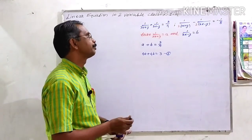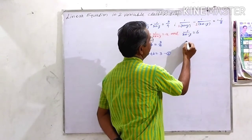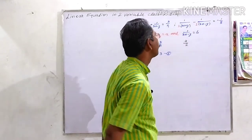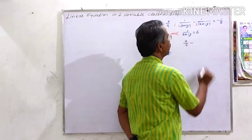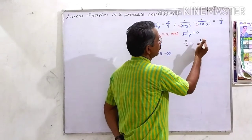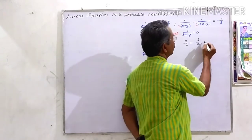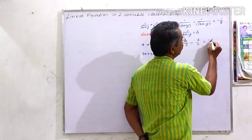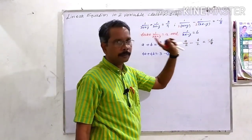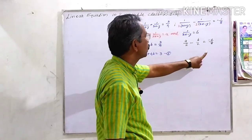Now for the second equation: 1 upon (3x plus y) means a, and 1 upon (3x minus y) means b, with a coefficient of 1 upon 2, making it a upon 2 minus b upon 2 equal to minus 1 upon 8. There are fractions here, fractions here, and it is also a fraction, so we have to cancel all the fraction denominators by multiplying by 8.